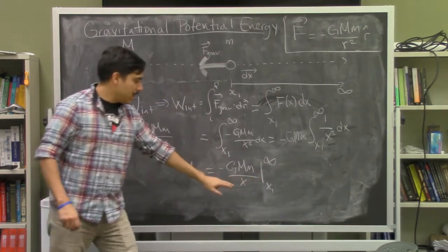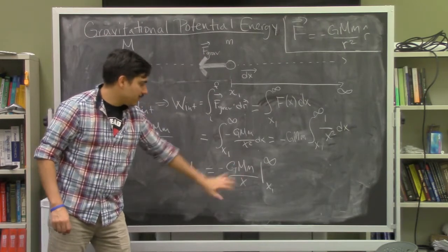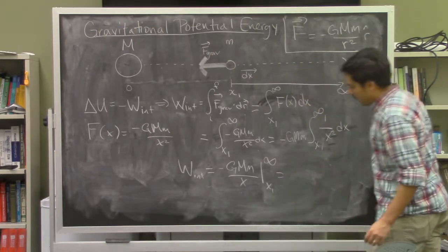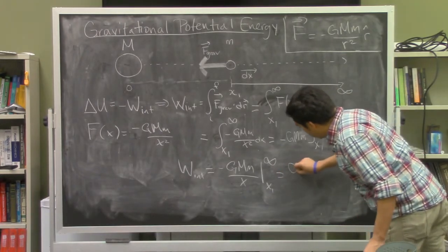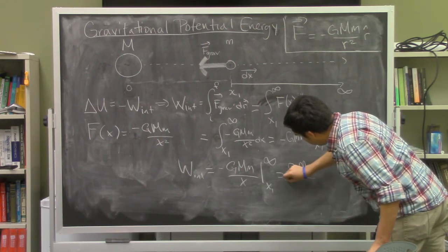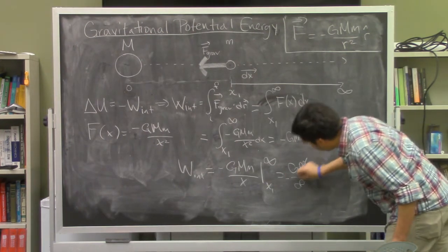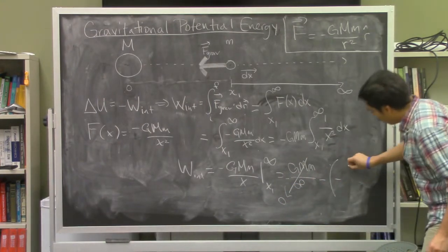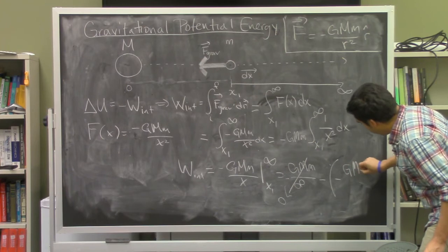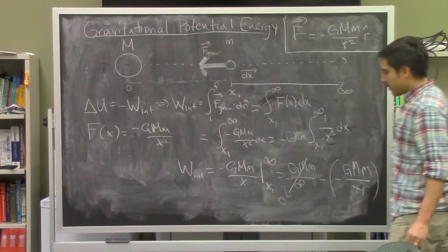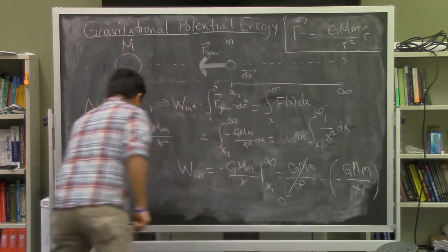When we plug in infinity, the first term goes to zero. So we have zero minus the term at x₁, which gives us -(-GMm/x₁) = GMm/x₁.